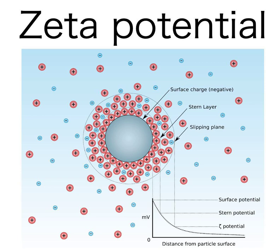Thus, it is widely used for quantification of the magnitude of the charge. However, zeta potential is not equal to the Stern potential or electric surface potential in the double layer, because these are defined at different locations. Such assumptions of equality should be applied with caution. Nevertheless, zeta potential is often the only available path for characterization of double layer properties.